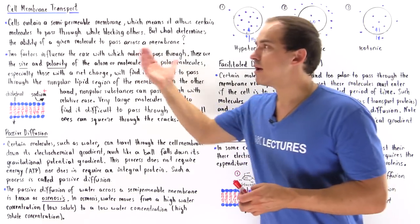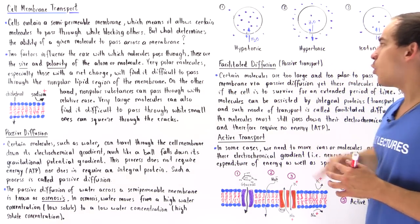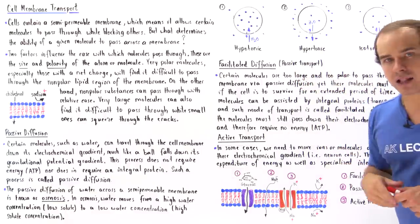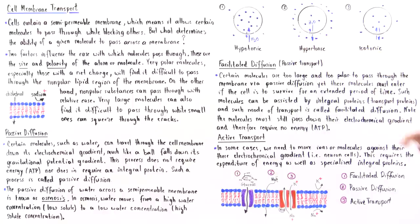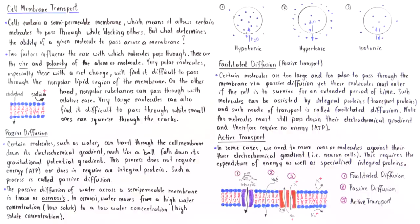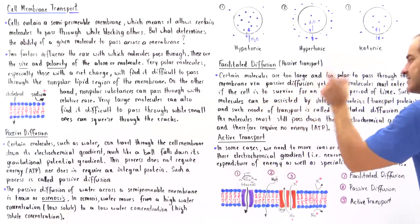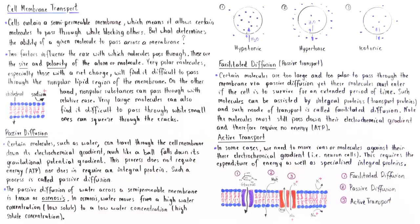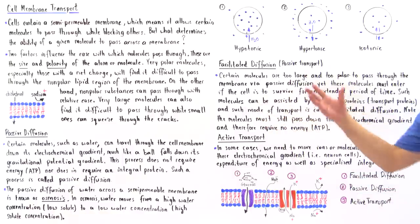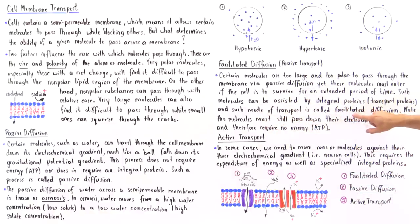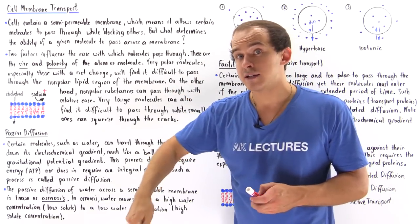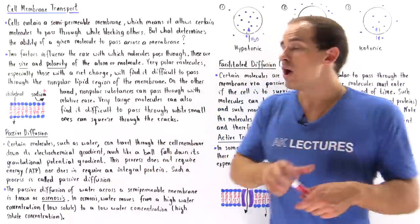A different type of transport is facilitated diffusion, also called passive transport. Certain molecules, such as sugar, are too large and too polar to pass across the cell membrane via passive diffusion. Yet these molecules must enter the cell for it to survive. Such molecules can be assisted by integral proteins, also known as transport or carrier proteins — this mode of transport is facilitated diffusion, still moving down the electrochemical gradient but requiring a protein.